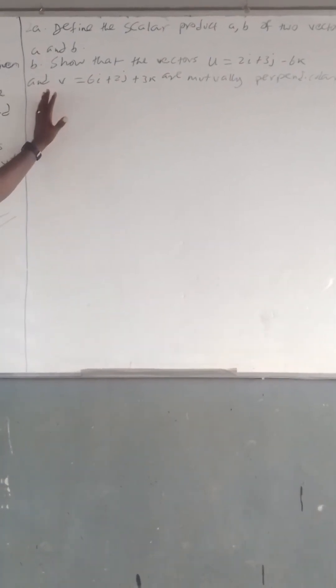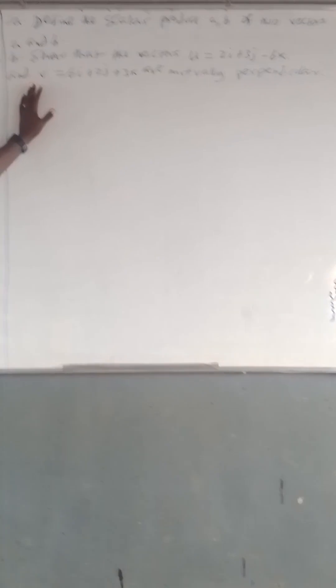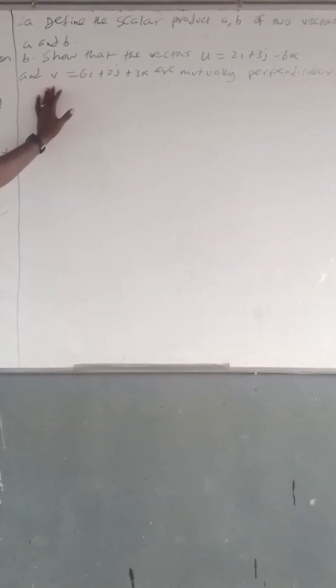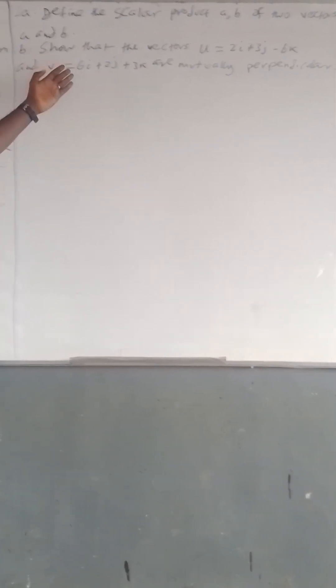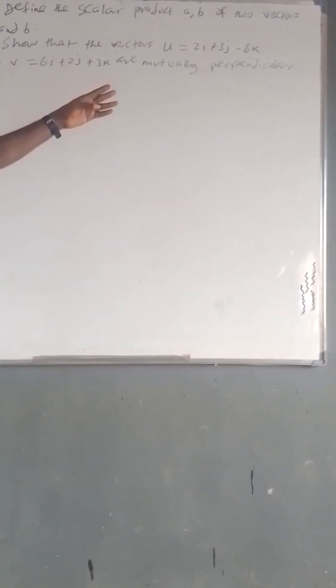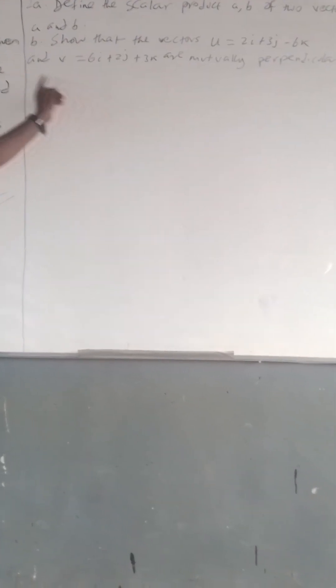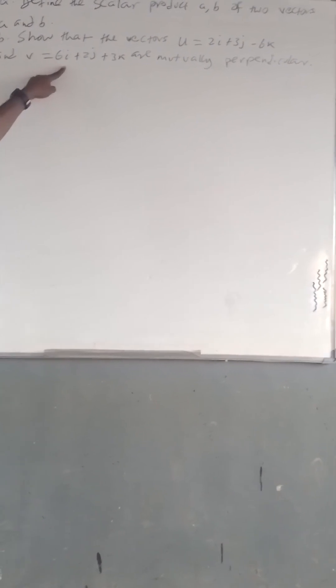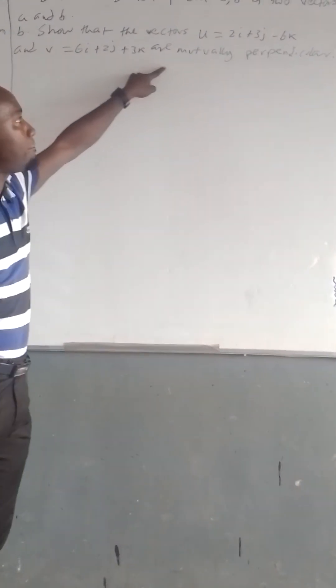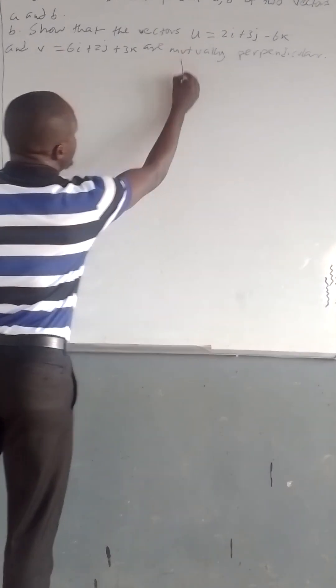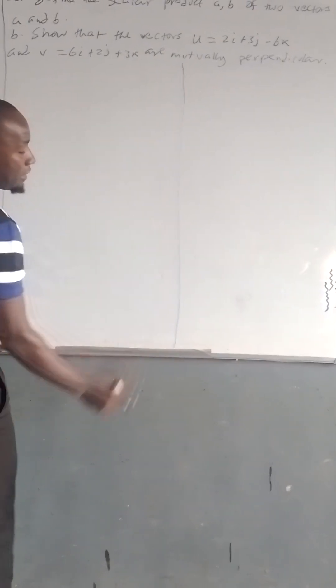I am going to show you some vectors, that is, find the scalar product of two vectors u and v. The vectors are u = 2i + 3j - 6k and v = 6i + 2j + 3k. I am going to show you that these two vectors are perpendicular.